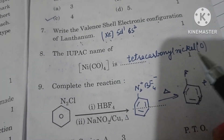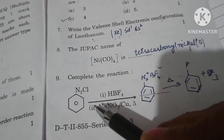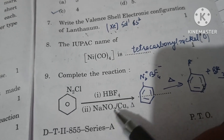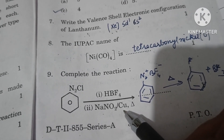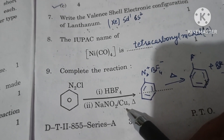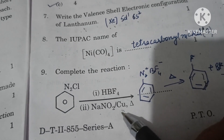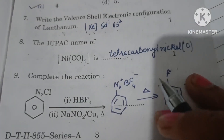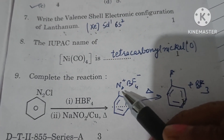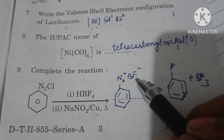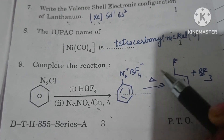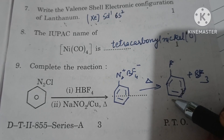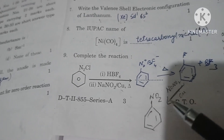The IUPAC name of Ni(CO)₄ is tetracarbonyl nickel(0). Complete the reaction: benzene diazonium chloride reacted with HBF₄ gives benzene diazonium tetrafluoroborate, then on heating it forms fluorobenzene.